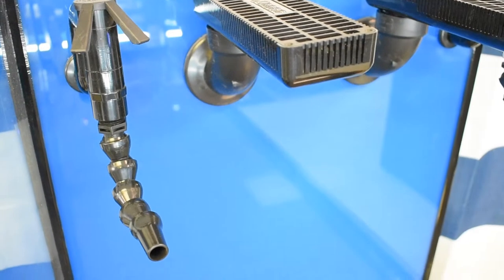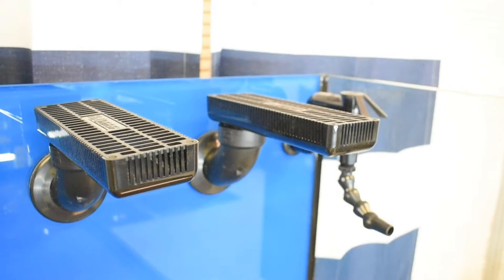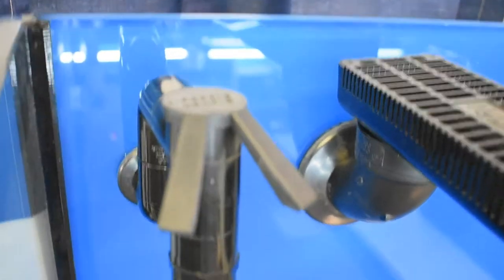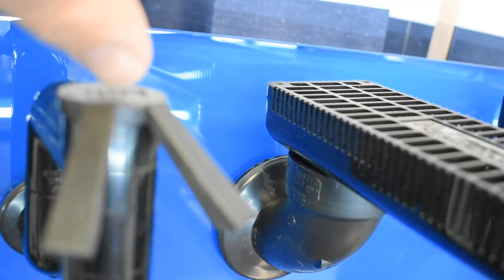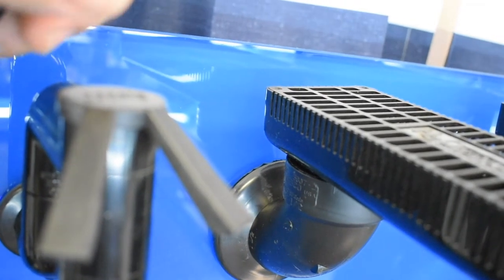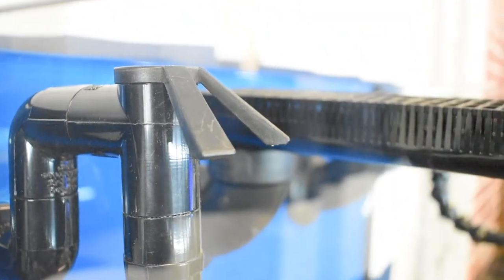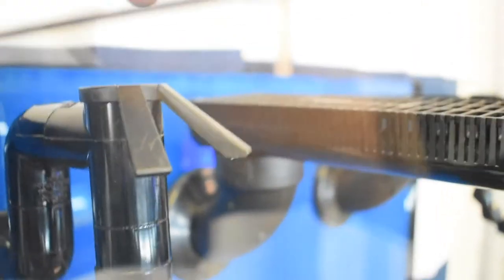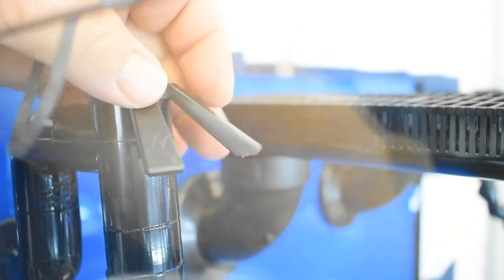These are our return lines, these are siphon stopper returns from Custom Aquariums. They have little vents in here. These are hollowed out right here and they have vents. What happens is when the water level breaks below a certain level, this sits a little bit higher than the intake of the overflow box.